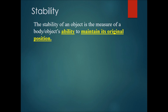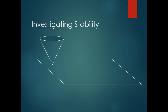Stability of an object is the measure of an object's ability to maintain its original position. For example, if I knock into something or if I try to turn something, how much effort do I need to put in order to make it topple over? If I need to put a lot of effort, or I need to turn it very far to make it topple over, then it has a lot of stability. However, if I just touch it once and it drops down, that means it's not stable.